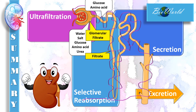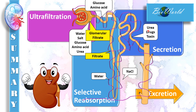As the filtrate flows down the descending limb of the loop of Henle, water will be reabsorbed into the vasa recta, and as the filtrate flows up along the ascending limb, sodium will diffuse into the medulla of the kidney. The filtrate then continues to flow into the distal convoluted tubule where secretion occurs, and the peritubular capillaries secrete waste such as urea, drugs, or toxins into the distal convoluted tubule. The filtrate together with the waste substances will empty into the collecting duct and form urine. The urine then exits the kidney via the ureter and accumulates in the bladder to be excreted later.